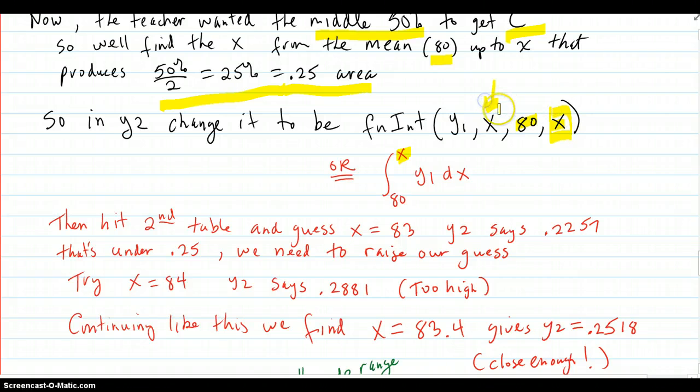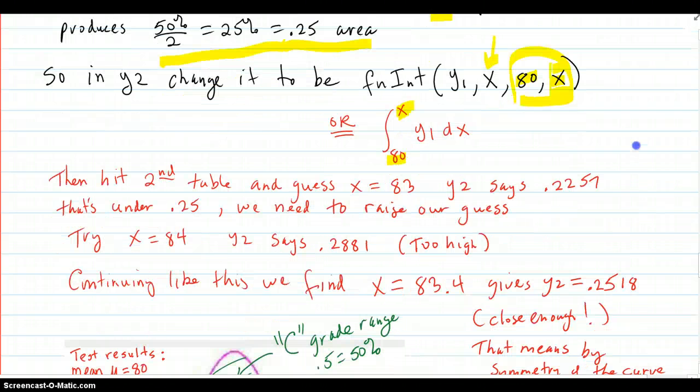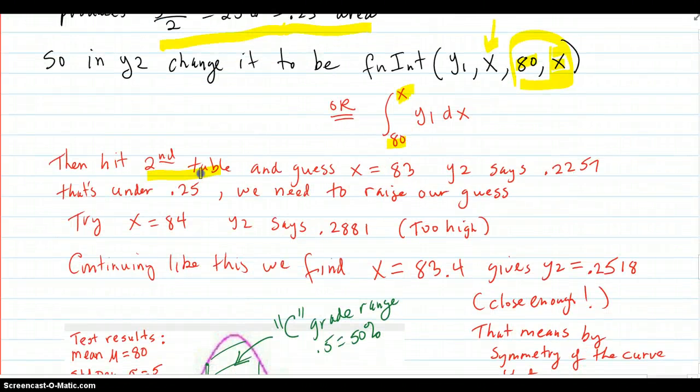So, in y2, change what's in there to be 80 up to x. And, we're going to guess this x. By the way, this x right here just says we're integrating with respect to the x that's in the formula. This is the range. 80 up to x. Or, if it gives you the integral form inside y2, do 80 up to x. Then, you hit second table again.